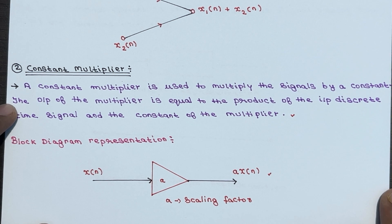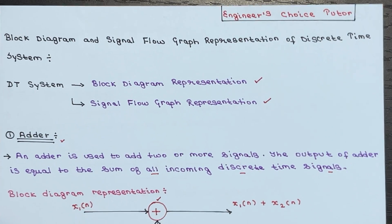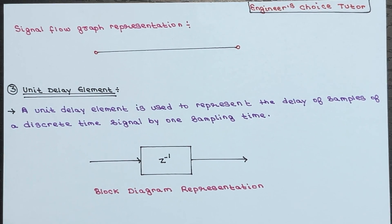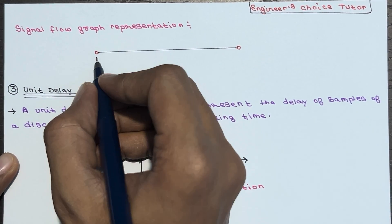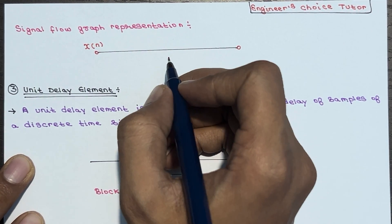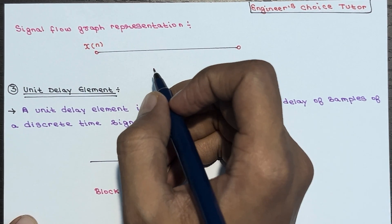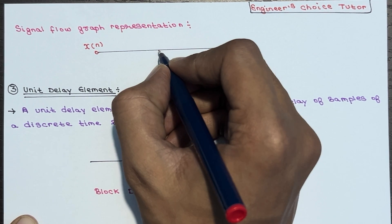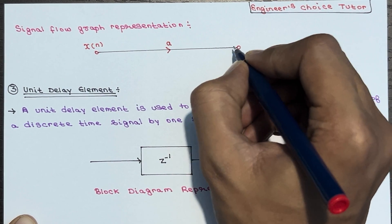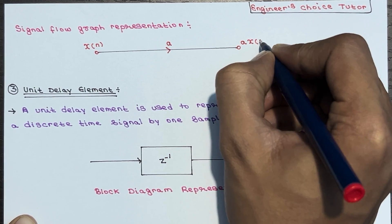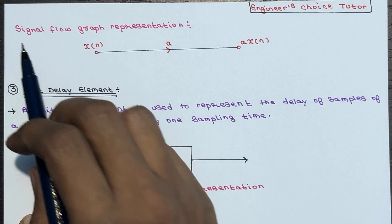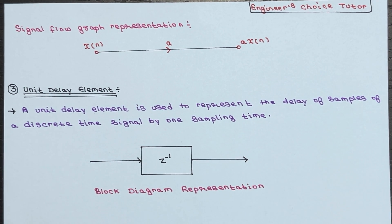Now for the equivalent signal flow graph representation of the constant multiplier: two nodes are present — the input node is x of n and the output node gives a times x of n. You draw an arrow from input to output and label it with 'a'. This is how you represent the constant multiplier in a signal flow graph.